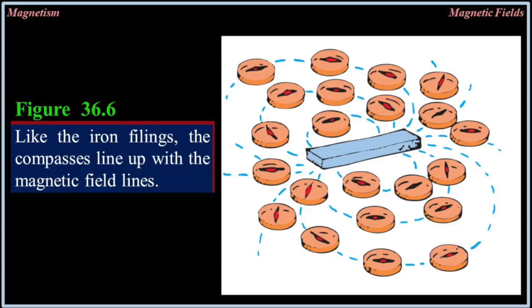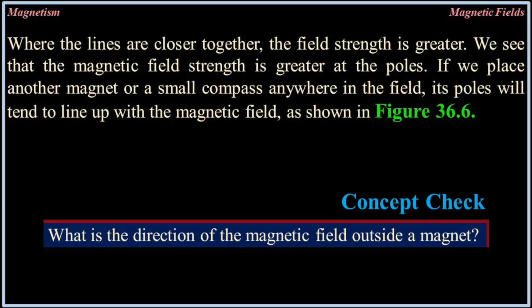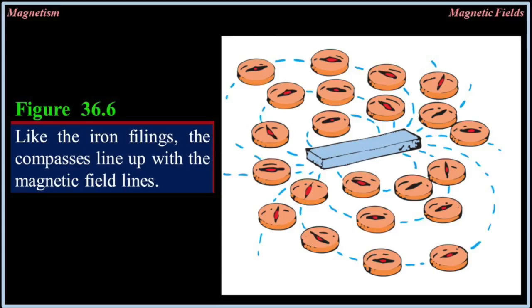Concept check: what is the direction of the magnetic field outside a magnet? Like the iron filings, the compasses line up with the magnetic field lines.